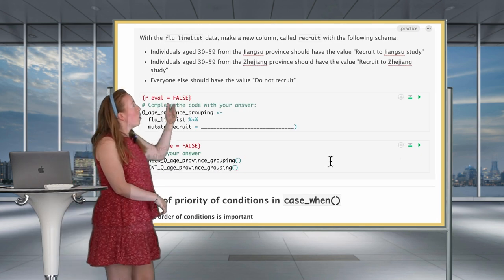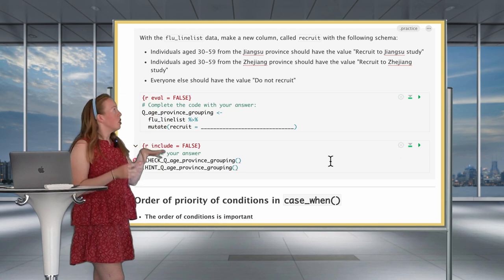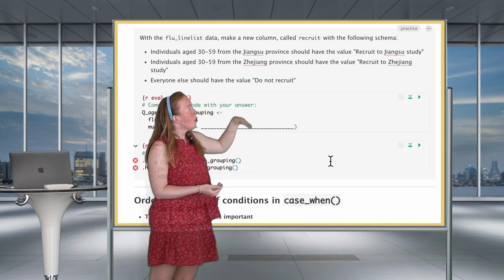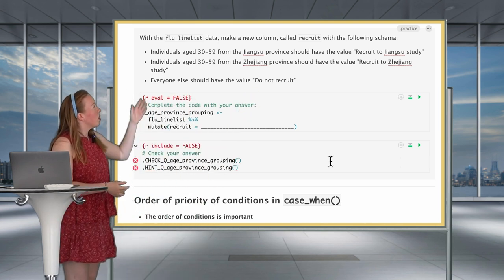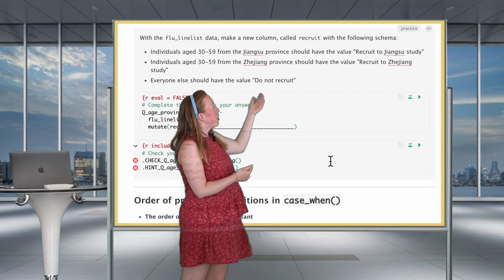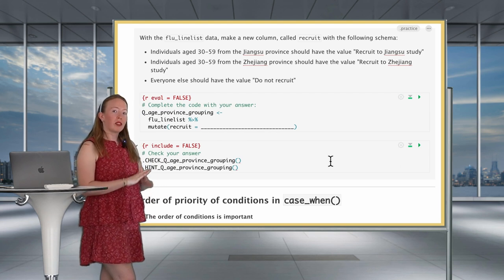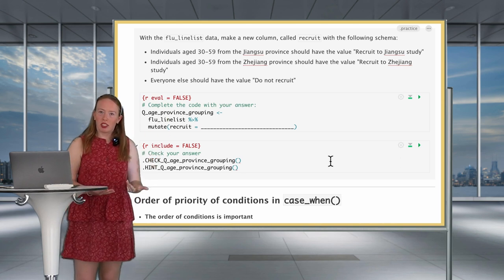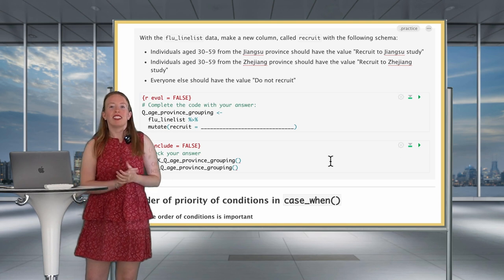Now your turn: make a 'recruit' column where individuals aged 30 to 59 from Jiangsu province are 'recruit to Jiangsu study', those aged 30 to 59 from Zhejiang province are 'recruit to Zhejiang study', and everyone else is 'do not recruit'. Very similar to what we just did, but using geographical information instead of gender.